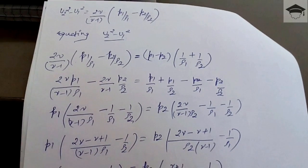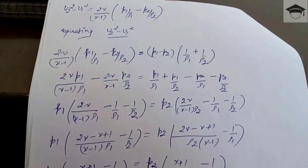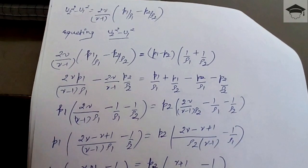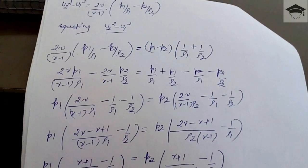So we get the relation p2/p1 = [(γ+1)/(ρ1(γ-1)) - 1/ρ2] / [(γ+1)/(ρ2(γ-1)) - 1/ρ1].